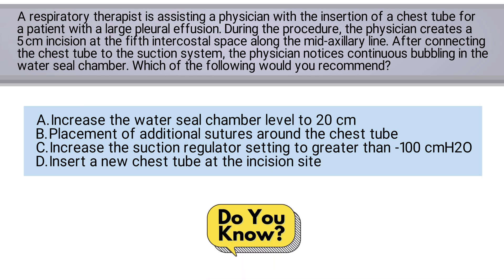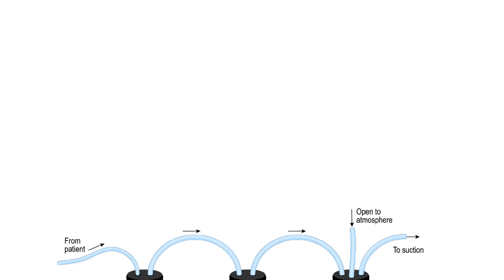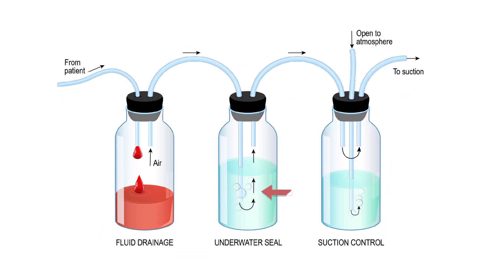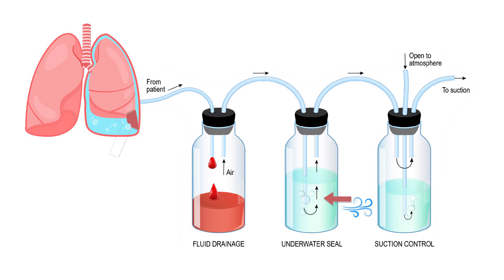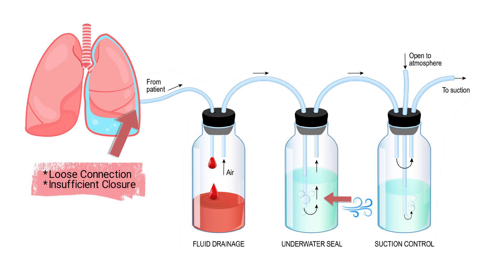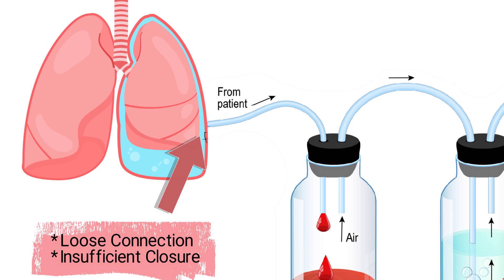Do you know the answer? Let's break it down. Continuous bubbling in the water seal chamber is an indication of an air leak. This typically occurs when there is an incomplete seal around the chest tube, often due to a loose connection or an insufficient closure of the insertion site. In this scenario, the large 5-centimeter incision may be the source of the leak. The most appropriate next step is to anticipate the placement of additional sutures around the chest tube to secure the site and eliminate the air leak.